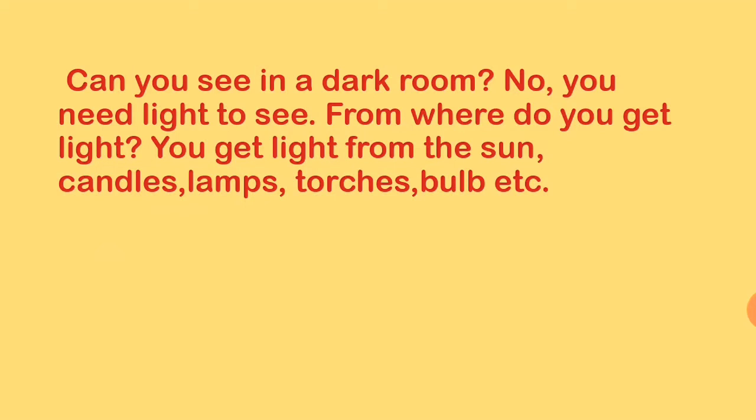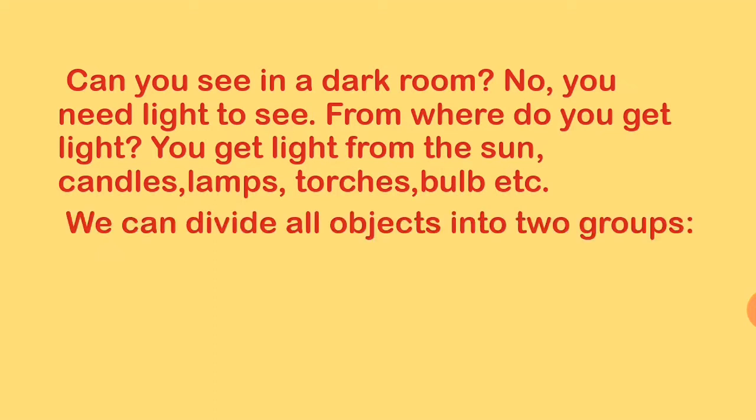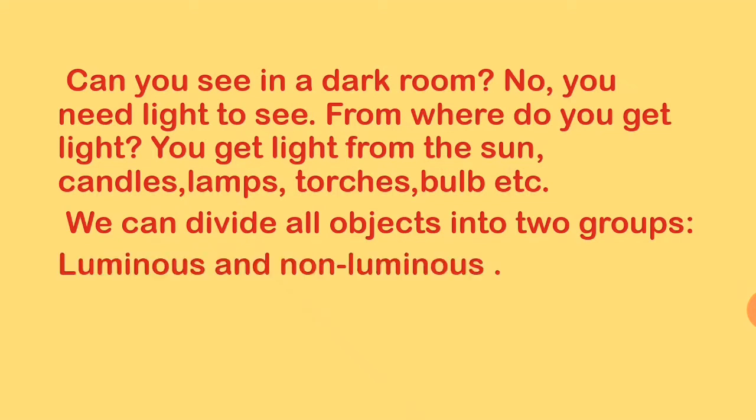From where do you get light? You get light from the sun, candles, lamps, torches, bulbs, etc. We can divide all objects into two groups: luminous and non-luminous.